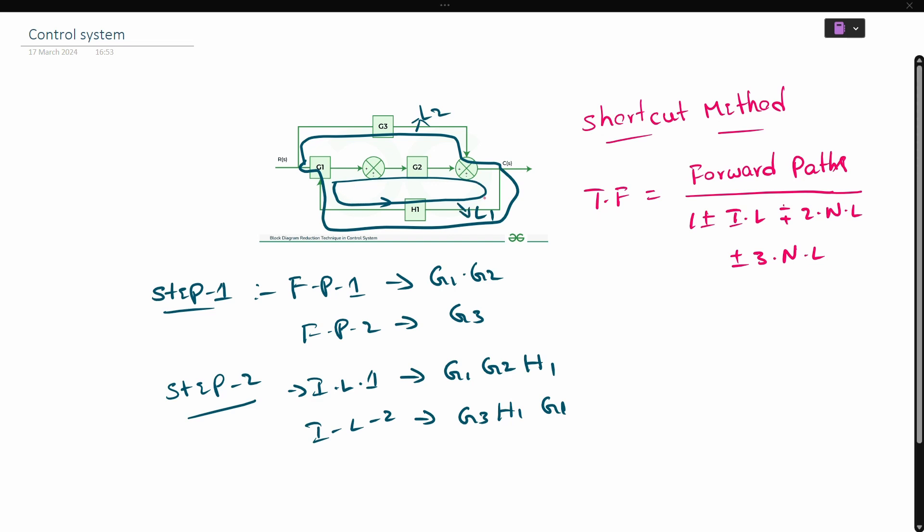We have two loops to check for non-touching loops in this block diagram. Loop 1 has a start and end point. There is a connection between Loop 1 and Loop 2 — G1 touches, the summing point touches, and H1 touches. Therefore, the two loops are touching each other, meaning there are no non-touching loops and no three non-touching loops.